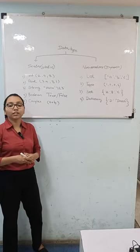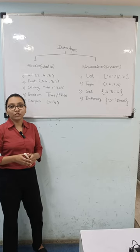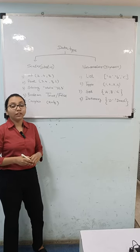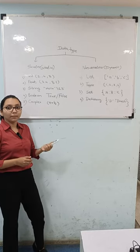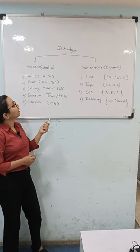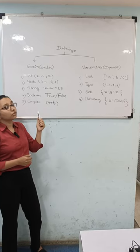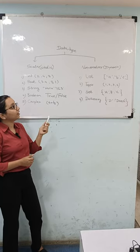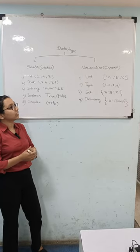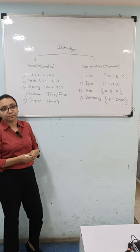Data type is basically a classification of data. Data type has two types: scalar and non-scalar. Scalar is also known as static data type and non-scalar is known as dynamic data type.